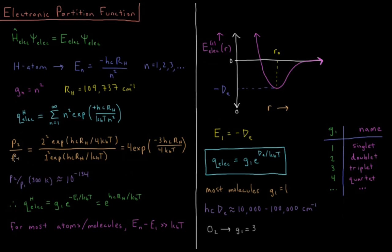So for all intents and purposes, the electron is just in the ground state. Our electronic partition function is generally just the degeneracy of the ground state times the Boltzmann factor of the ground state. So for the hydrogen atom, for example, this would be 1, its degeneracy, times e to the hcR over kT.